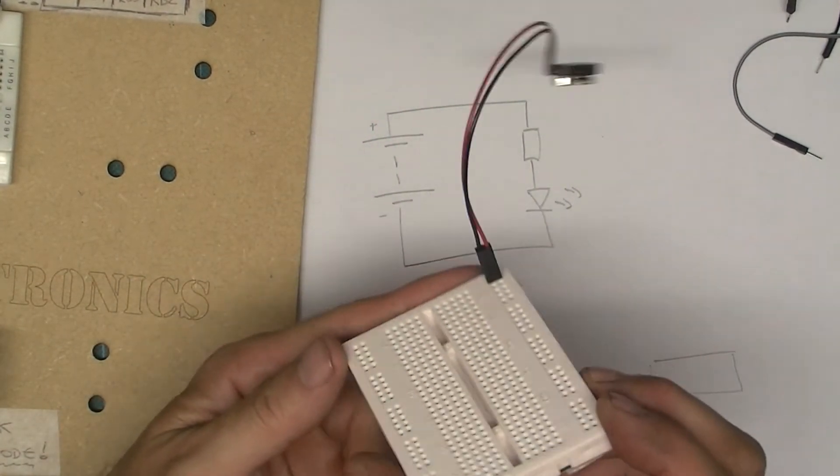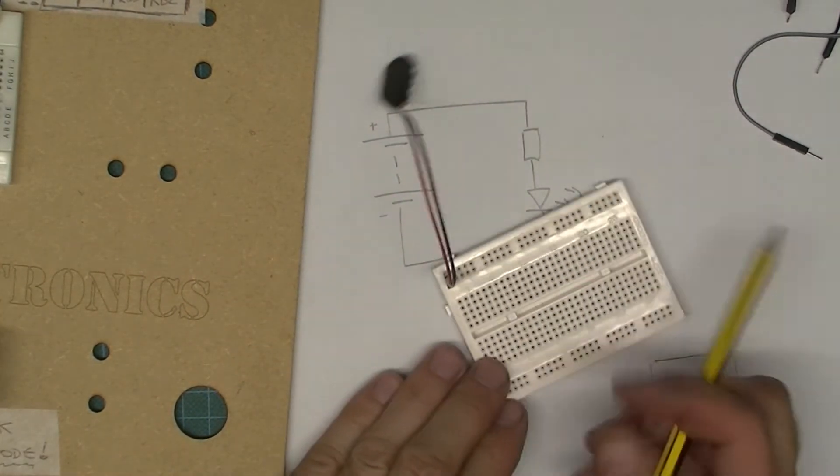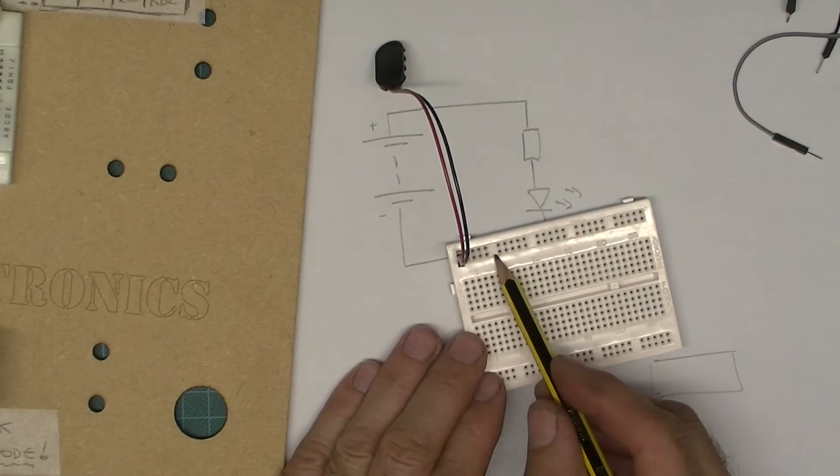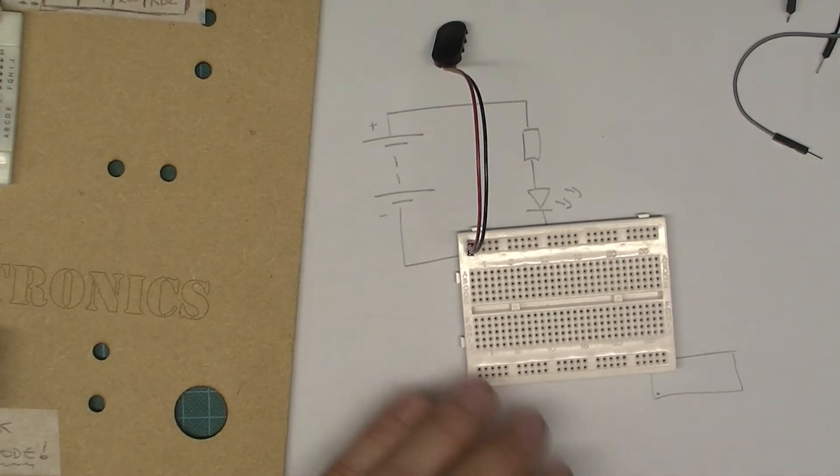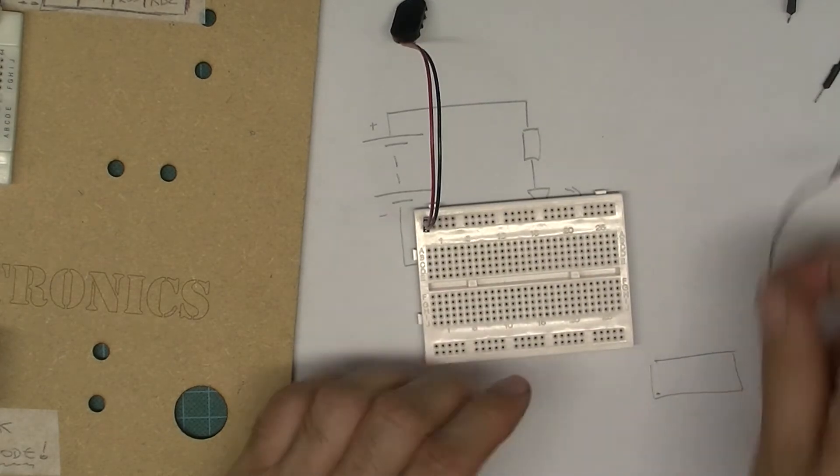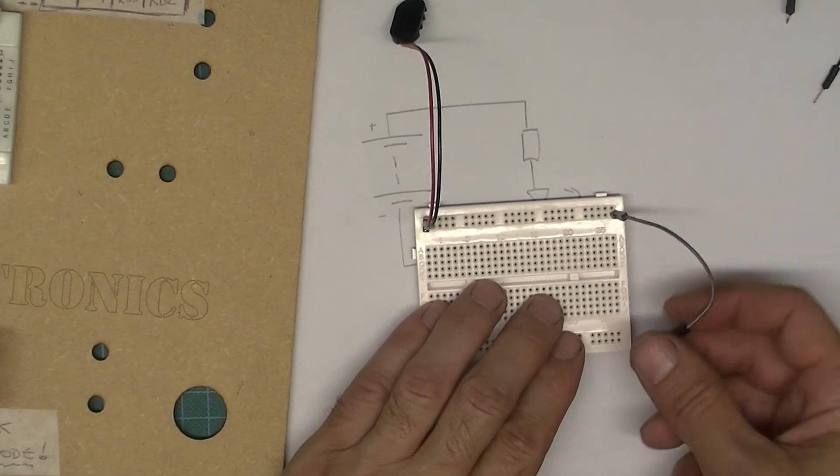I'm going to plug that in like that. Now I've got the positive supply on the very topmost and I've got zero volts down there. Now I've no longer got any rails down here—it might be that you can actually use the breadboard like that, but there's no reason to stop you.